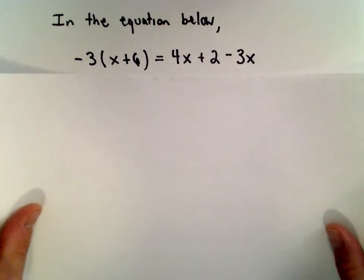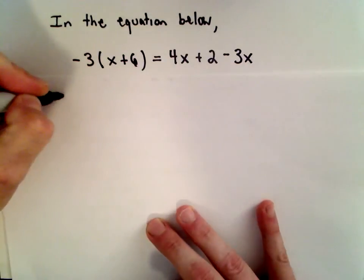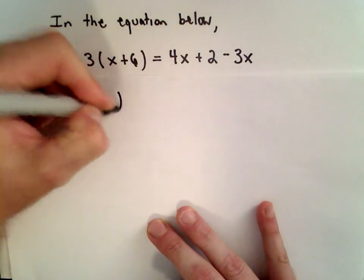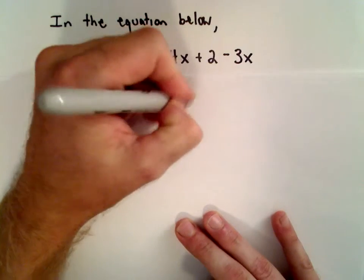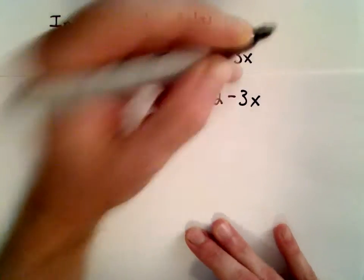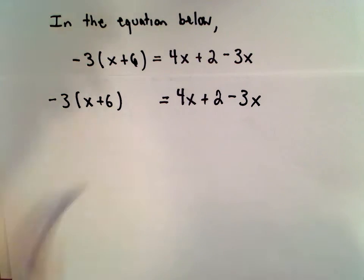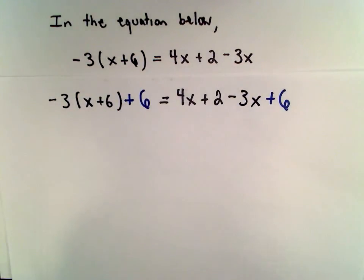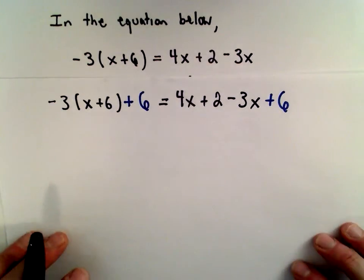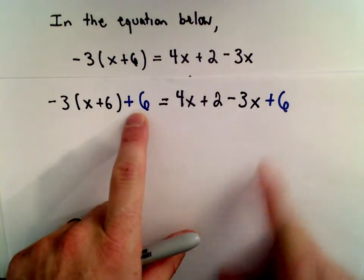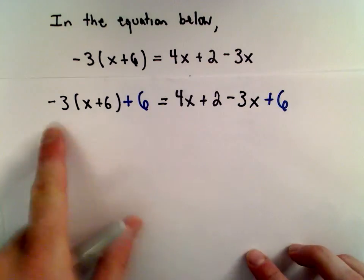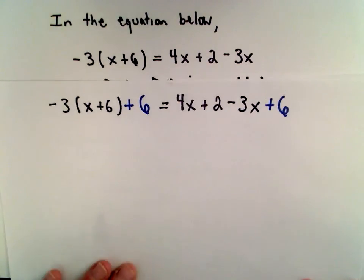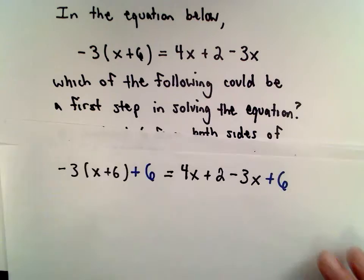Let's examine part A, which says add 6 to both sides. By adding 6 to both sides, I don't really see what that's going to do to help me simplify and start combining and making this problem more manageable. While it's perfectly legal to add 6 to both sides, I just don't see how that's going to help us arrive at a solution. Part A is probably not the thing to do.